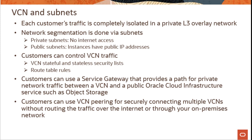By default, compute instances deployed in VCNs cannot access each other, since the virtual cloud networks are fully isolated. But if there is a use case where compute instances in one VCN need access to a compute instance in a different VCN, that can be achieved through VCN peering. VCN peering can be done both within the same region or across multiple regions, and the same feature can be used to provide access to your on-premise network.